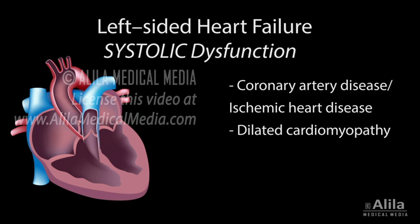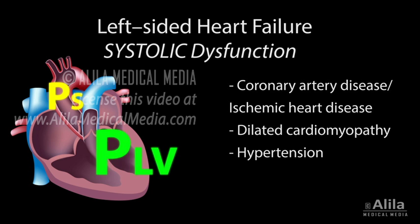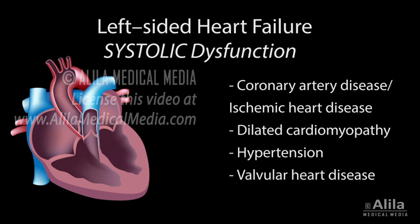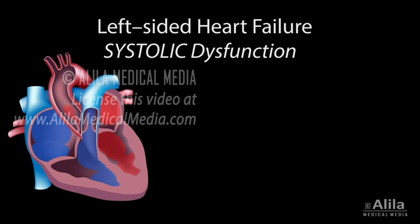Dilated cardiomyopathy: the ventricular wall is dilated, becomes thin and weak. Hypertension: higher systemic pressure makes it harder for the ventricle to eject blood, because the pressure in the left ventricle must exceed the systemic pressure for the aortic valve to open. Valvular heart disease: damage to the valves, such as stenosis, also makes it more difficult for the ventricle to pump.